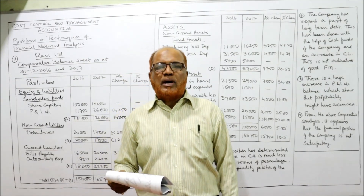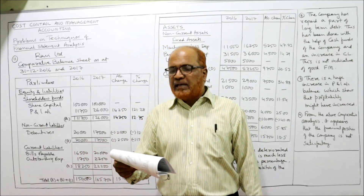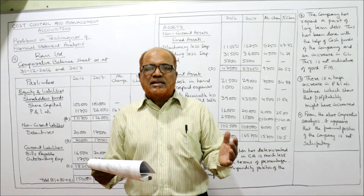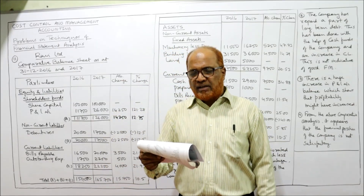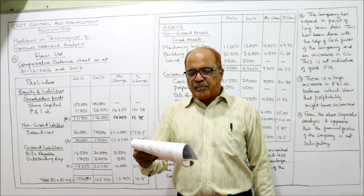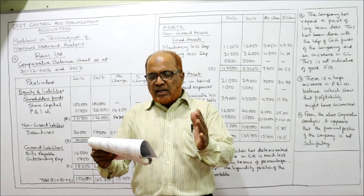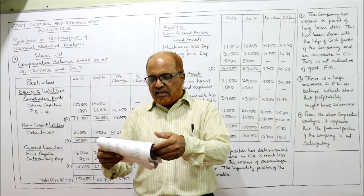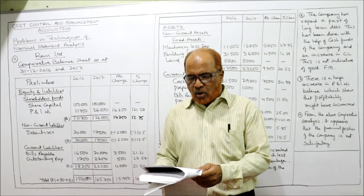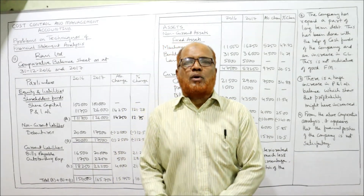Now I'm going to start problem number 11. The following information is extracted from the financial statements of Ravi Limited for the years ended 31st December 2016 and 2017. Data includes provision for bad debts, machinery depreciation, building, bills payable, outstanding expenses, debentures, share capital, P&L account, cash in hand, prepaid expenses, bills receivable, inventories, investments, machinery at cost, building at cost, and land.